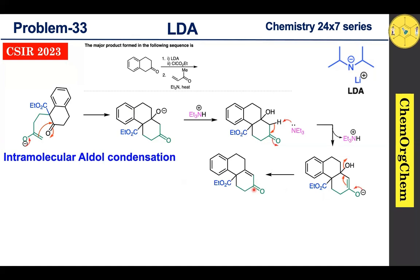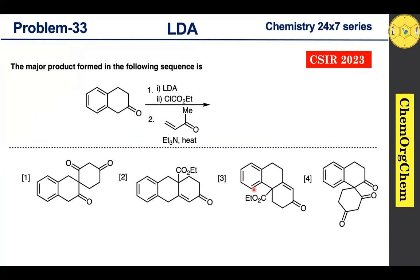When a reaction follows the sequence of Michael addition followed by intramolecular aldol condensation, it is known as Robinson annulation. Based on our discussion, among the four options, the correct answer is option three. If you enjoyed this video, please give it a thumbs up, share it with your friends, subscribe, and click the bell icon to stay updated. Thanks for watching — bye!